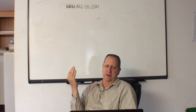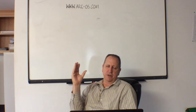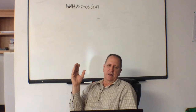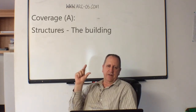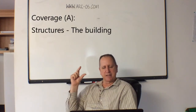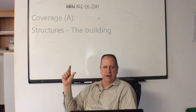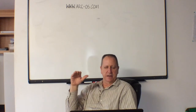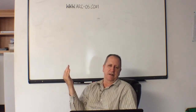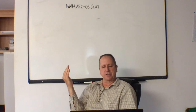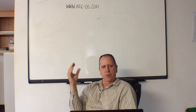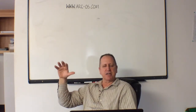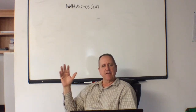Not every insurance policy is the same, but most residential policies are very similar. In residential policies, which I'm focused on in this video, we're going to call it Coverage A. Coverage A is the building itself, so whatever your building has for coverage, it'll have a dollar amount on the declaration page. Let's assume that the declaration page says two hundred thousand dollars.